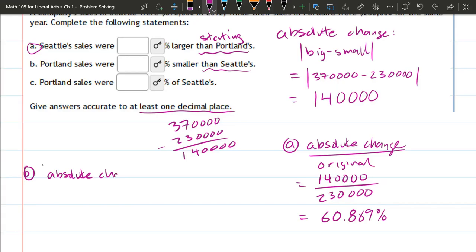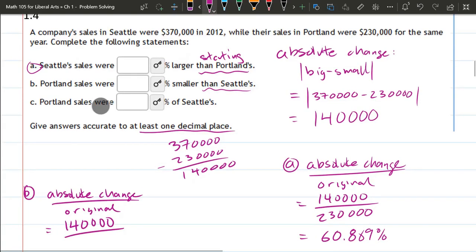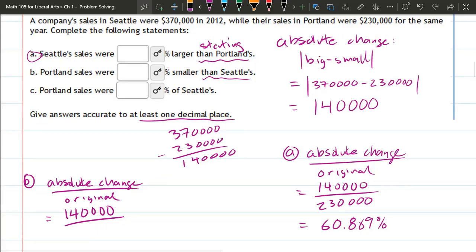So we have absolute change divided by the original. So our absolute change is the same number. And the denominator is going to be Seattle's numbers, which is right at the top. Now, I'm not going to type this in the calculator, but you can definitely do that. And that will give you your percentage right there.